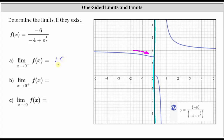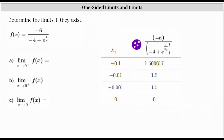We can also verify this by using a table of values, by entering x values that approach zero from the left, meaning values less than zero. For example, x equals negative 0.1, and notice how the output is almost 1.5, just a little bit larger. An x value closer to zero would be negative 0.01 and then negative 0.001. Notice how both of these x values return a function value of 1.5 — the calculator is just rounding because the value is so close to 1.5. Also notice when x equals zero, we have division by zero and the function is undefined. As we approach x equals zero from values less than zero, the function value is approaching 1.5, which verifies the one-sided limit.